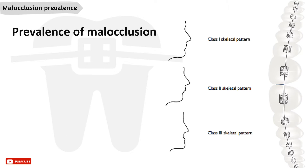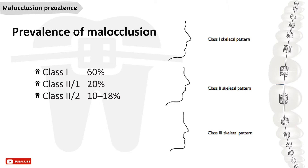Malocclusions, according to Angle's classification, are classified into three classes and some have subdivisions. Know the prevalence of each one: 60% Class 1, 20% Class 2 Division 1, 10–18% Class 2 Division 2, and 5% Class 3.